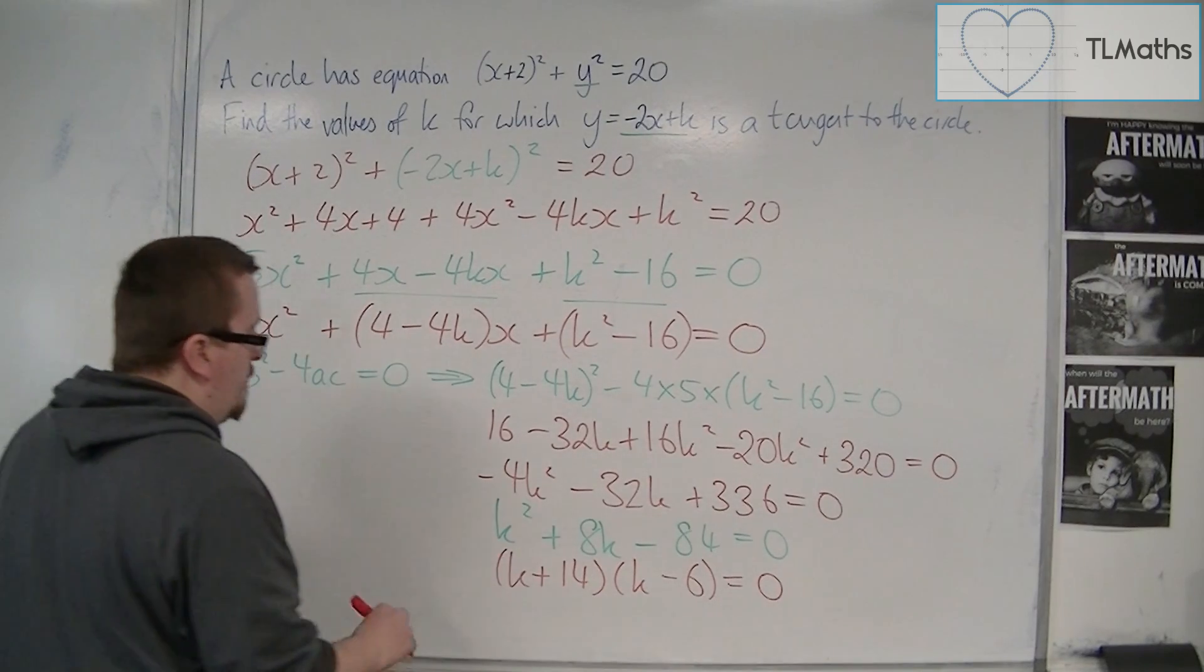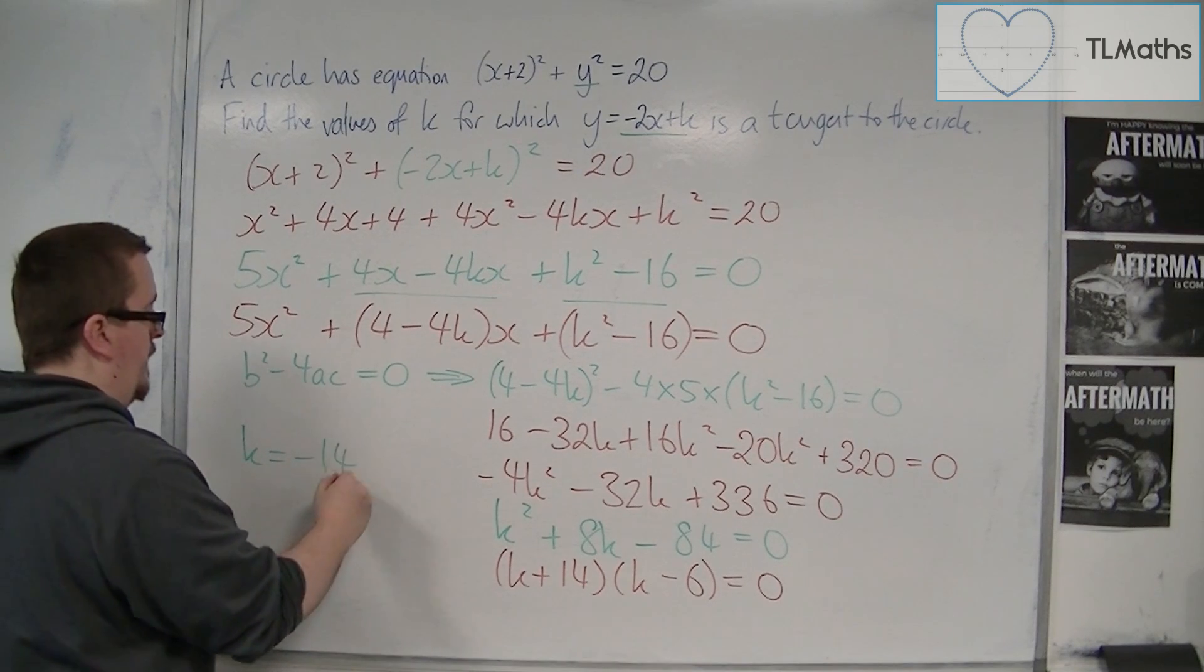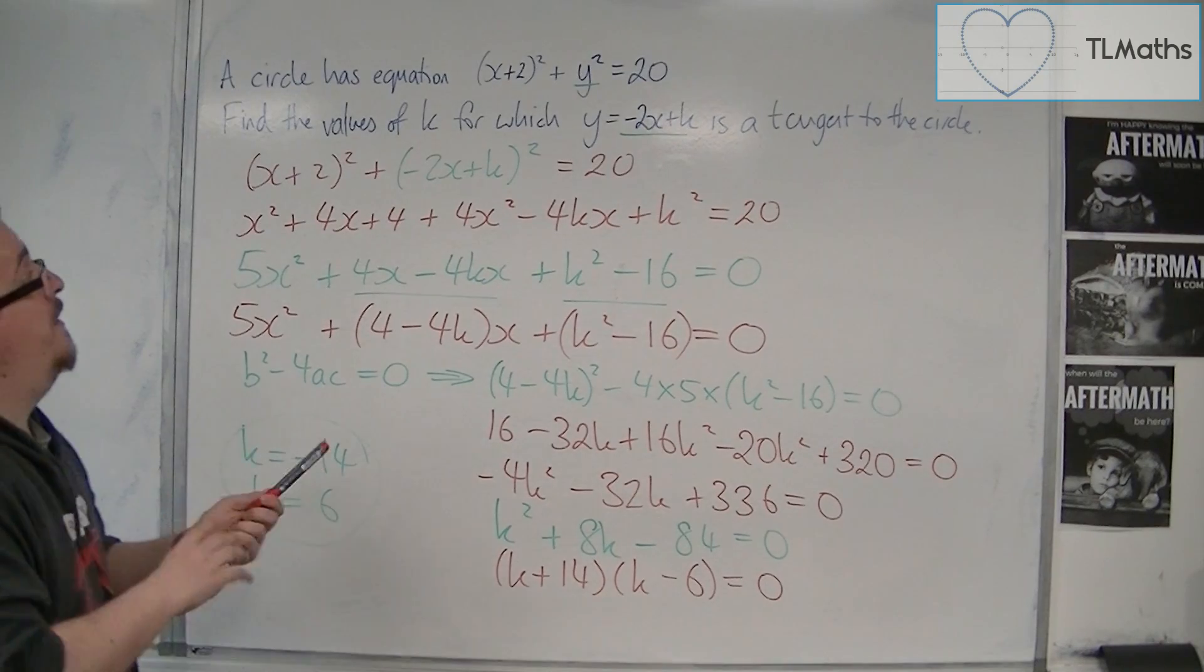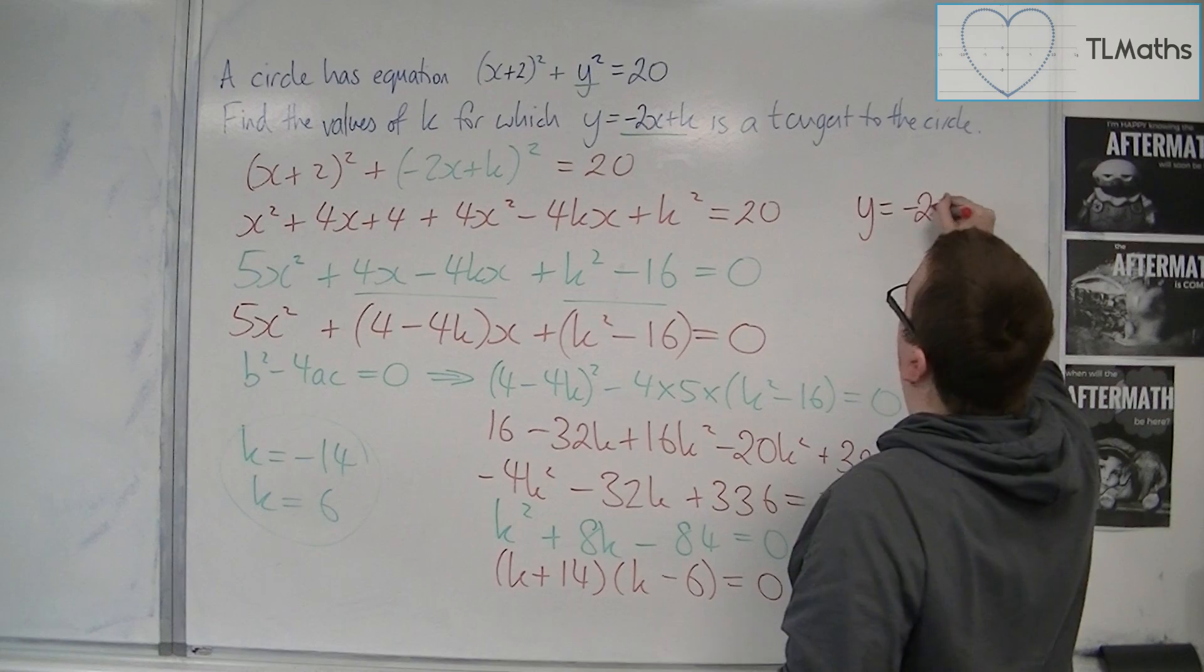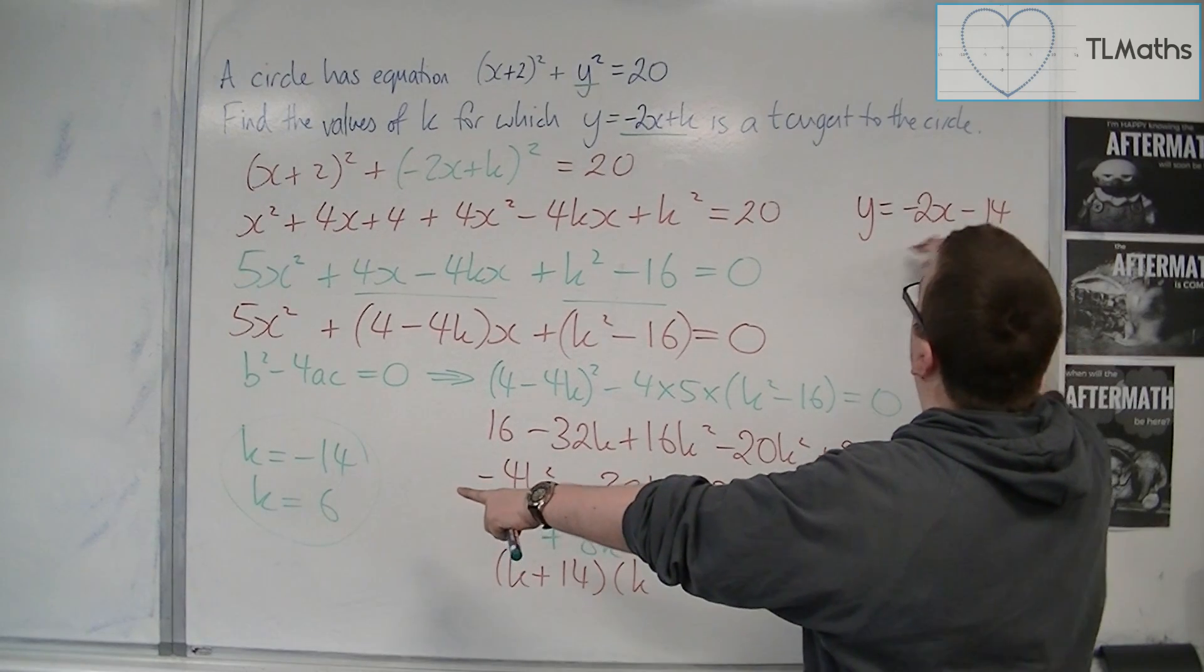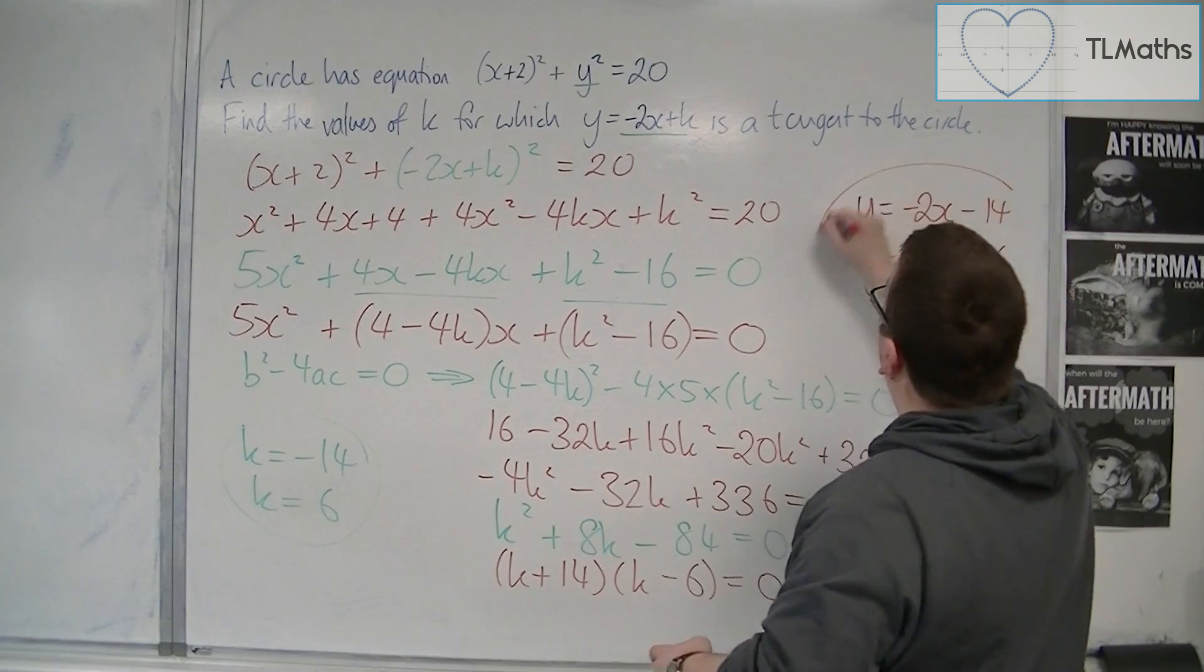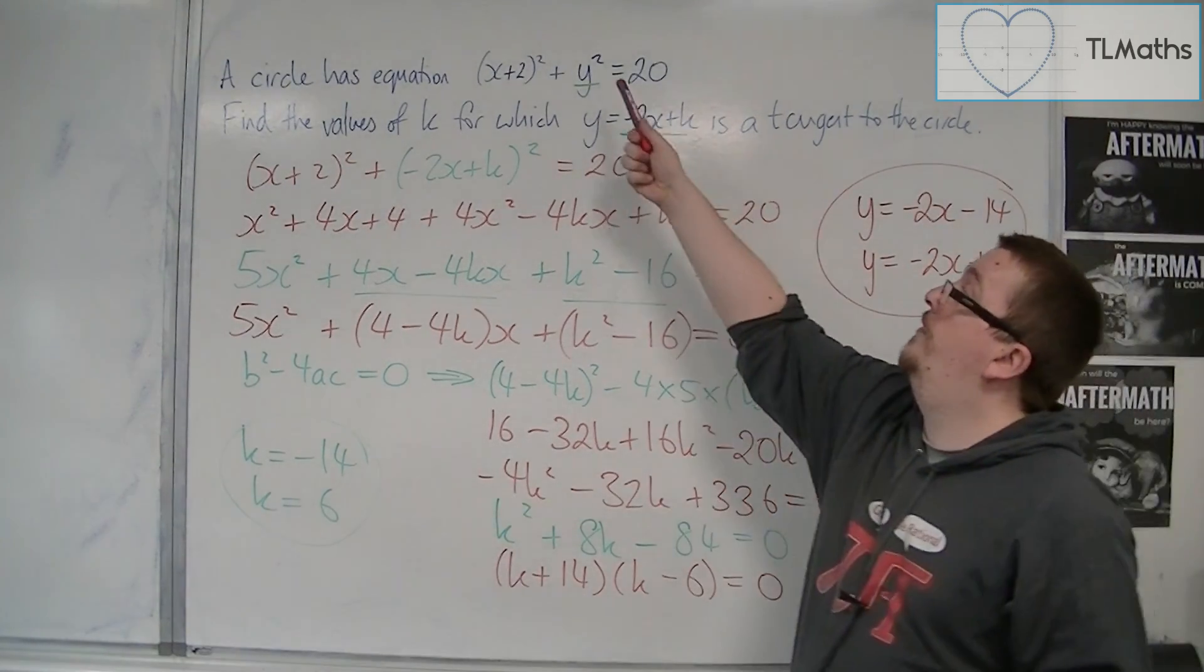So k must be equal to -14, and k is equal to 6 are the answers that we want. So in other words, what I'm saying is that y = -2x - 14 and y = -2x + 6, these are tangent lines to this circle.